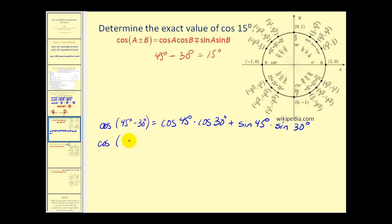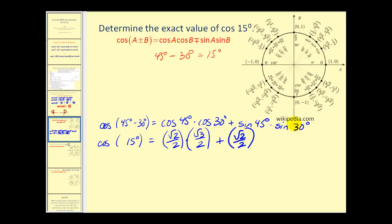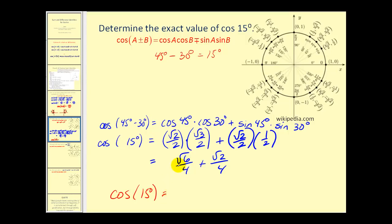Replacing the left side with cosine fifteen degrees and using the unit circle: cosine of forty-five degrees is square root two over two, times cosine of thirty degrees which is square root three over two, plus sine of forty-five degrees which is also square root two over two, times sine of thirty degrees which is one half. This gives square root six over four plus square root two over four. So cosine of fifteen degrees equals the square root of six plus the square root of two, all divided by four.